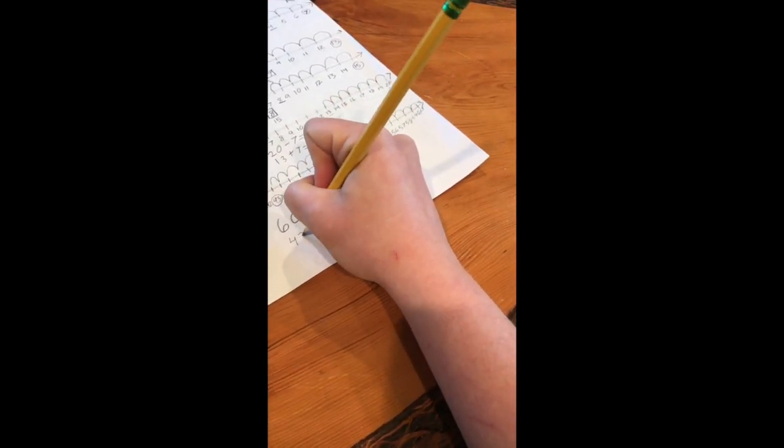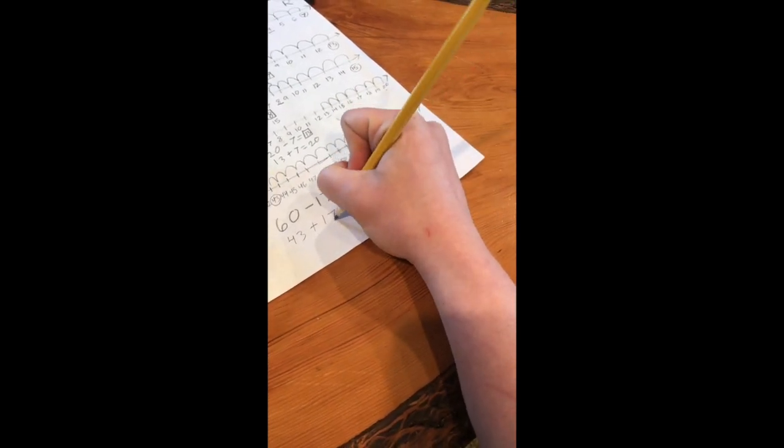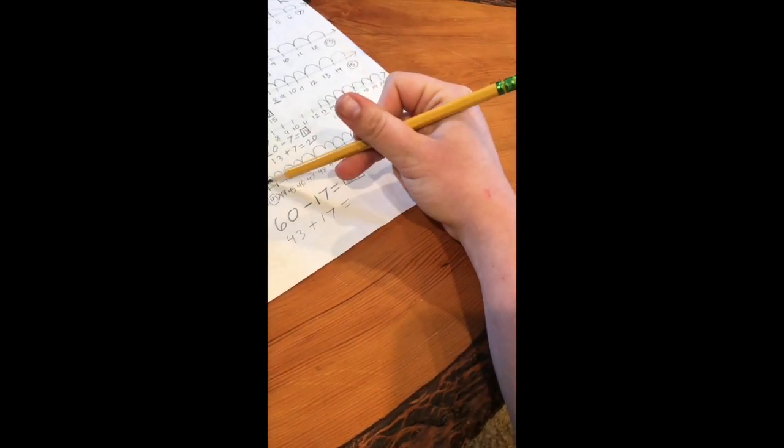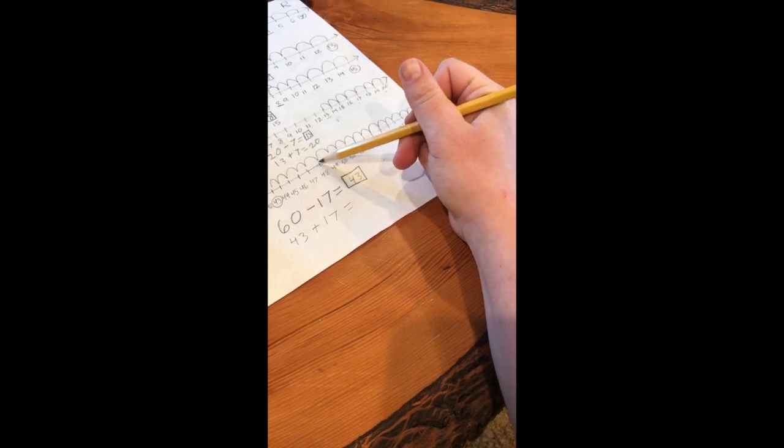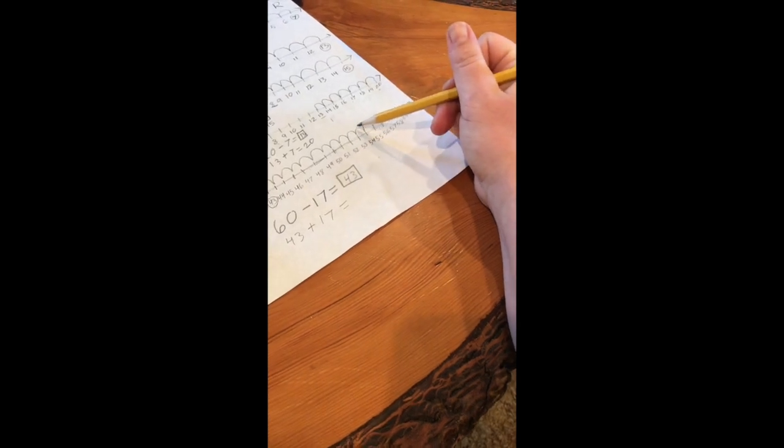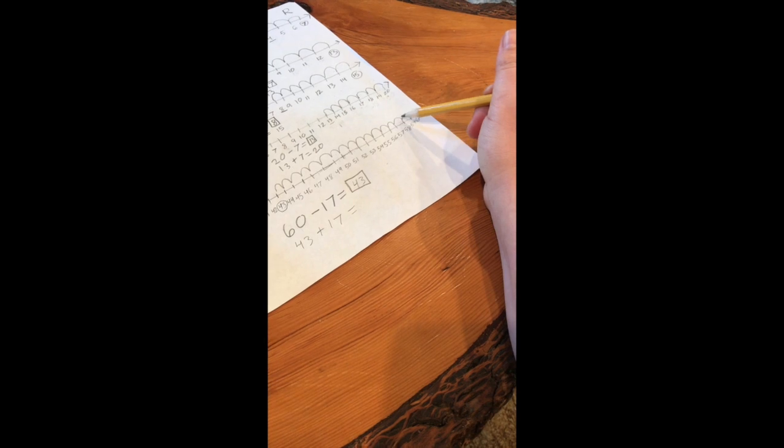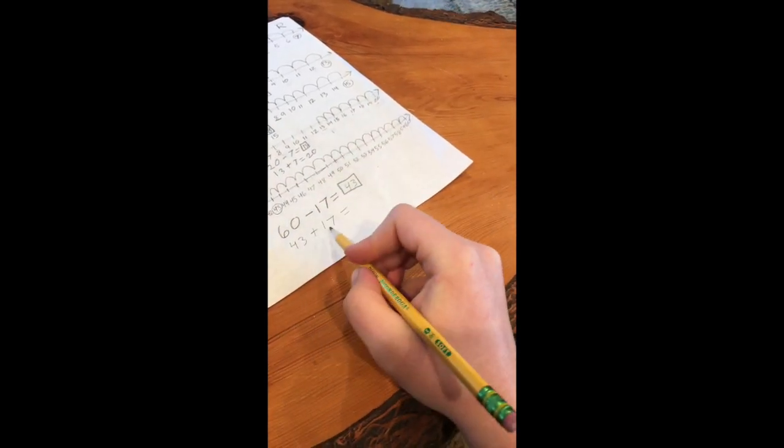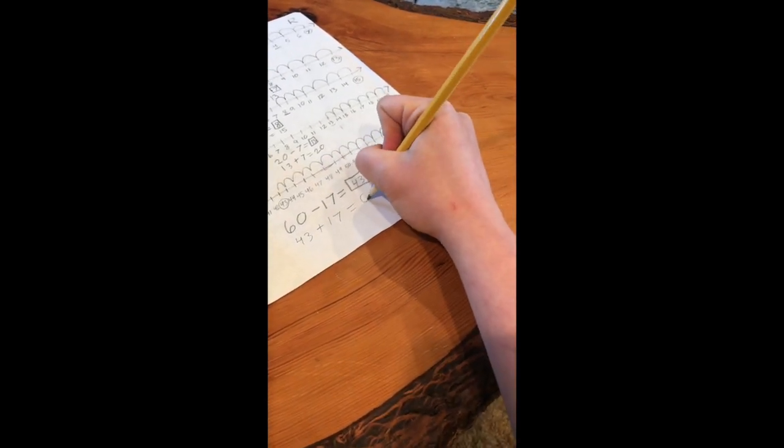We do 43 plus 17 equals. So we do 43 plus 17. Counting forward 17 hops: 1, 2, 3, 4, 5, 6, 7, 8, 9, 10, 11, 12, 13, 14, 15, 16, 17. 43 plus 17 equals 60.